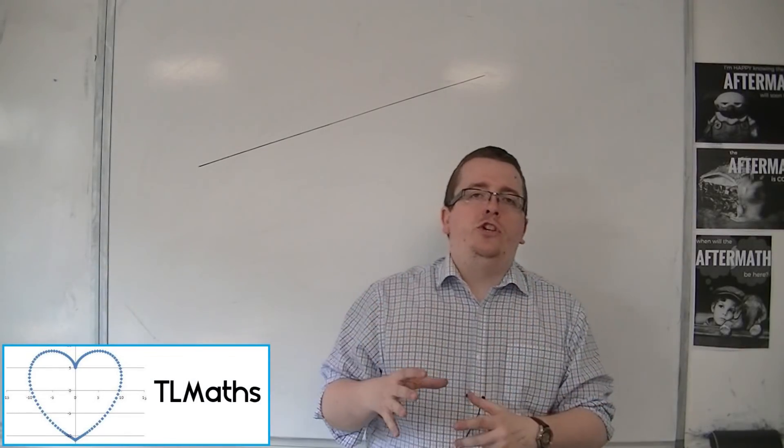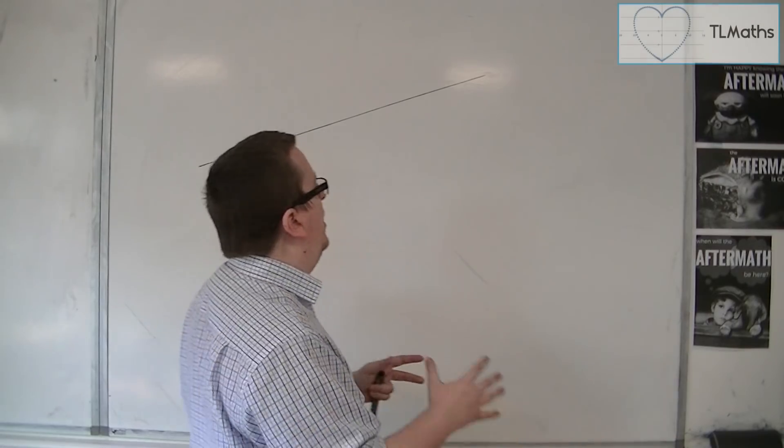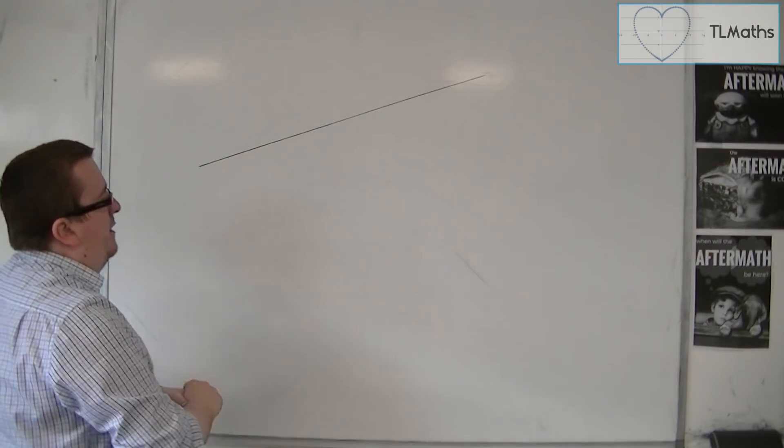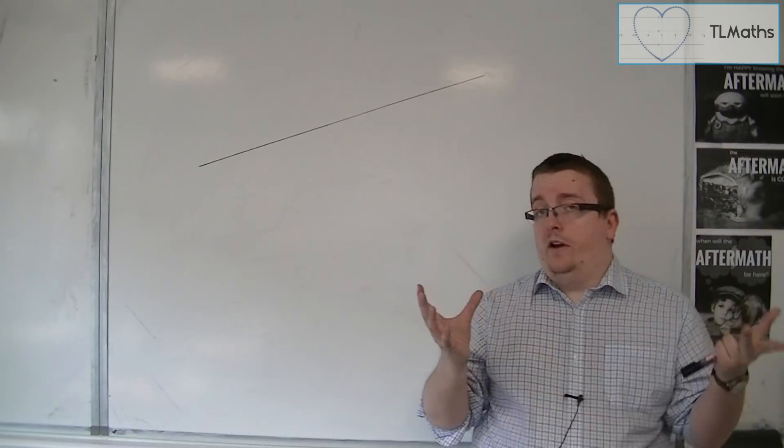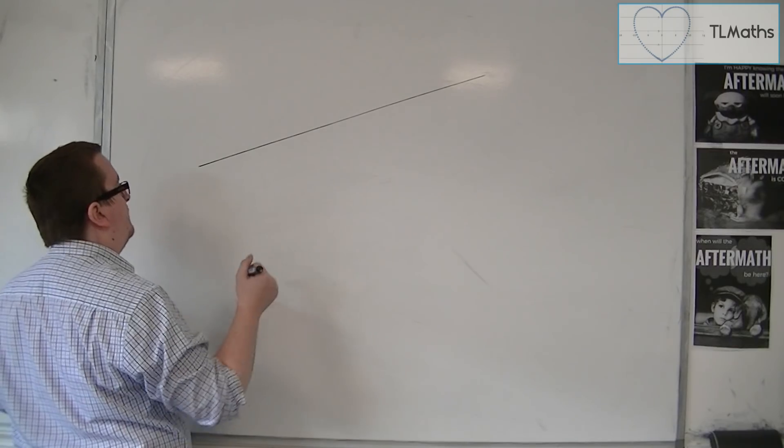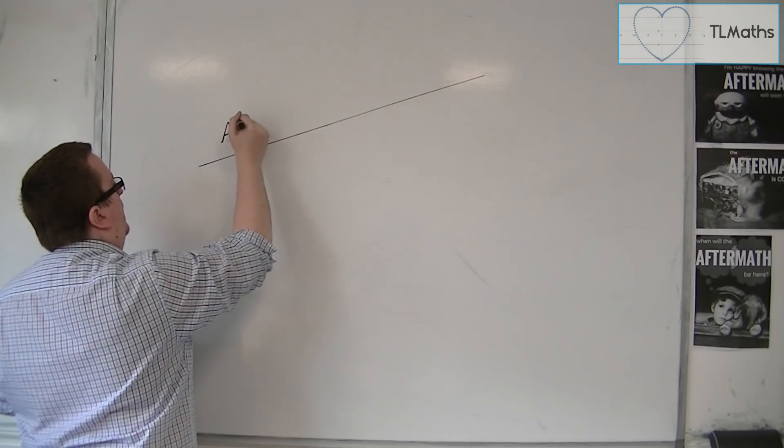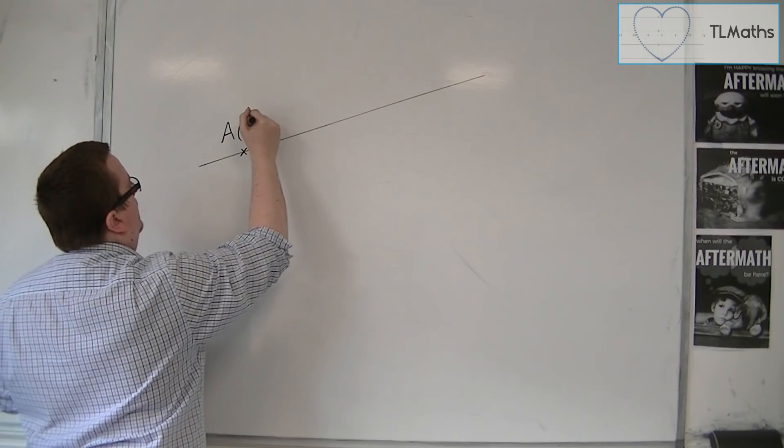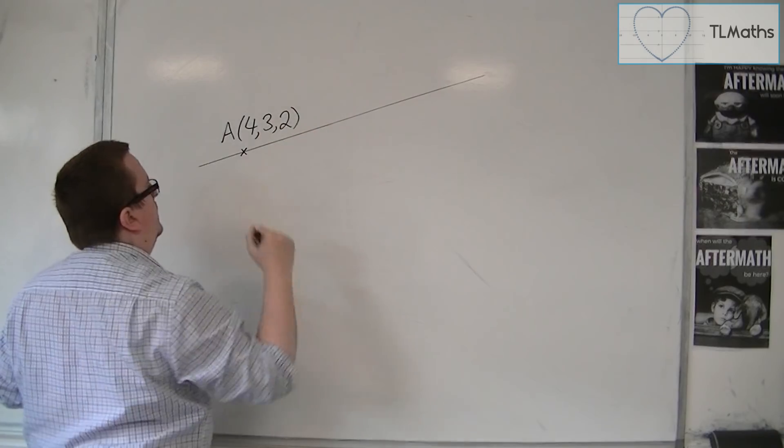In this video, I want to introduce you to the vector equation of a line. So, here is a line. And let's say that the line is passing through a particular point. Let's say this point has coordinates 4, 3, 2.